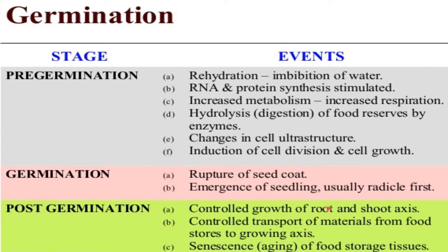In post-germination, controlled growth of root and shoot axis and controlled transport of material from food stores to the growing axis is seen, followed by senescence — that is aging — and senescence of the food storage tissues.